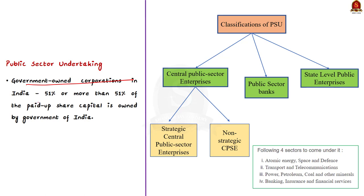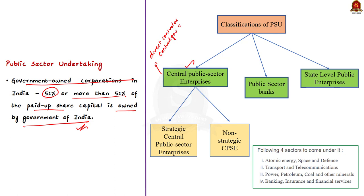Public Sector Undertakings are government-owned corporations in India in which around 51 percent or more of the paid-up share capital is owned by the Government of India. PSUs can be classified into three categories. The first is Central Public Sector Enterprises — companies under the direct control of the central government or other CPSEs by 51 percent or more capital share ownership. CPSEs are further classified into strategic and non-strategic CPSEs.